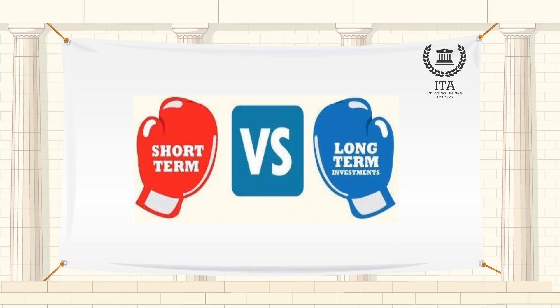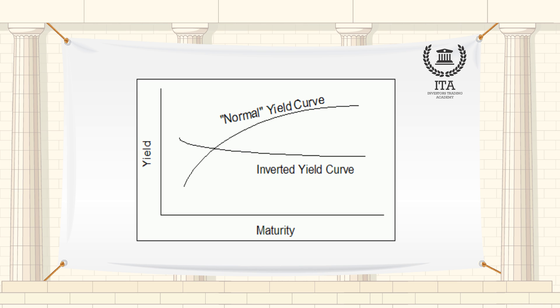Typically, short-term interest rates are lower than long-term rates, so the yield curve slopes upwards, reflecting higher yields for longer-term investments. This is referred to as a normal yield curve. When the spread between short-term and long-term interest rates narrows, the yield curve begins to flatten.